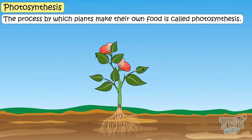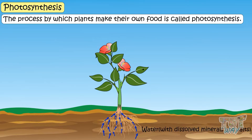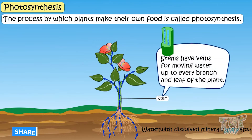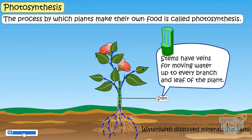Roots of the plants absorb water from soil that already has many dissolved minerals and salts in it. This water with dissolved minerals and salts moves up to the stem. The stem has veins for moving water up the plant to every branch and leaf of the plant.